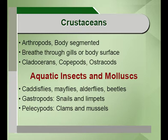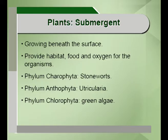These comprise the pelecypods and gastropods, which are important parts of mollusk biodiversity. In plants, there are two important types: submergent and emergent. Submergent plants grow beneath the surface of the water, providing food, habitat and oxygen for organisms. There are three types: Charophyta, Anthophyta and Chlorophyta, comprised of stonewort, Utricularia and green algae.